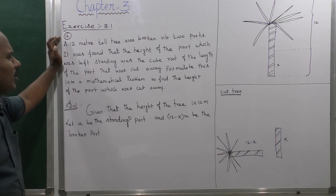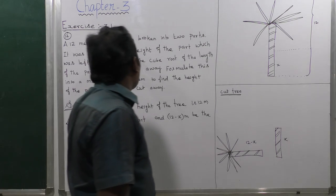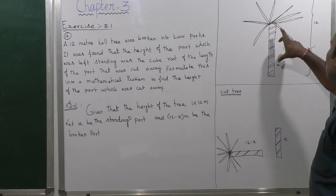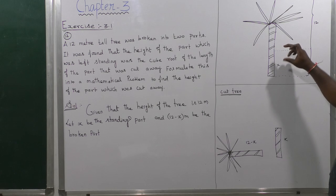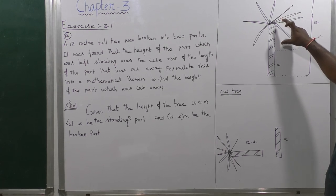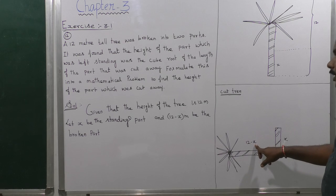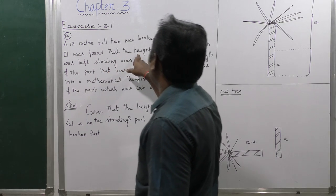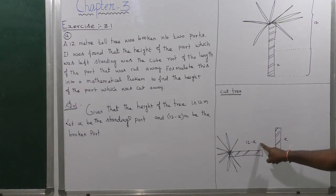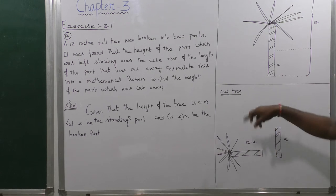This is a size 3.1 question with a small answer. A 12-meter tall tree has broken into two parts. We need to identify the cut position: the standing part is x, and the remaining part is 12 minus x. It has been found that the height of the part left standing equals the cubic root of the other part — that is, x equals 12 minus x to the power of 1 by 3.